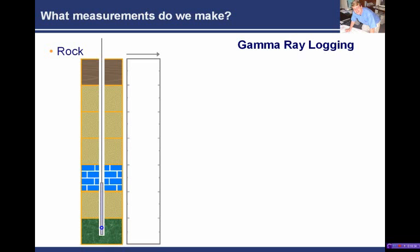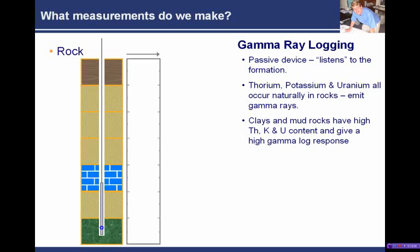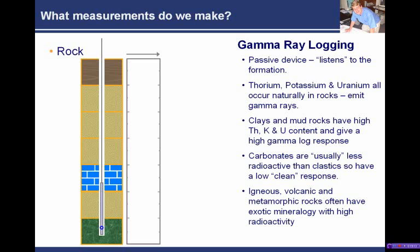This first type of measurement is one of the simplest we make, just to determine rock type, and it's called gamma-ray logging. A gamma-ray tool is a passive device — it listens to the formation and doesn't do anything to the rock itself. We put it down the hole and it listens to the signals given off by the reservoir. Naturally, rocks contain naturally occurring radioactive elements — thorium, potassium, and uranium — and they all emit gamma rays. So all around us, rocks are emitting these gamma rays, and if you listen for and measure them, you can detect them.